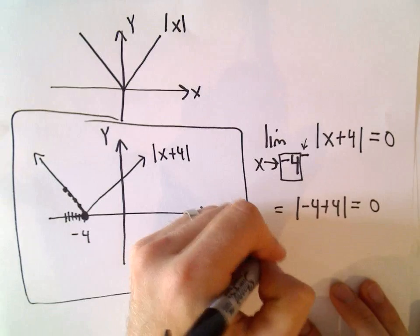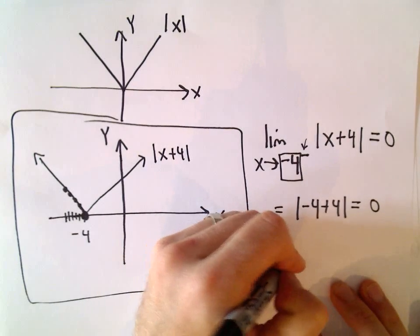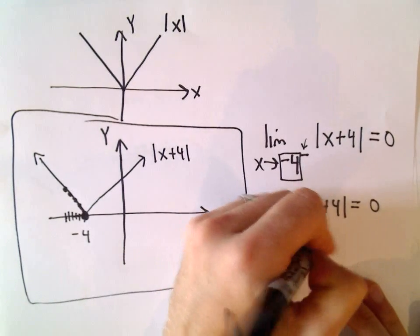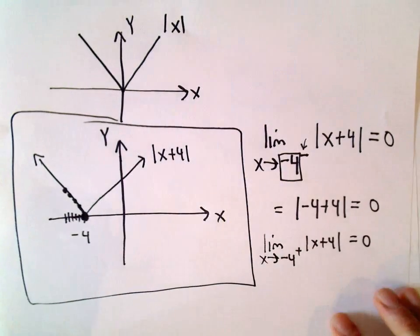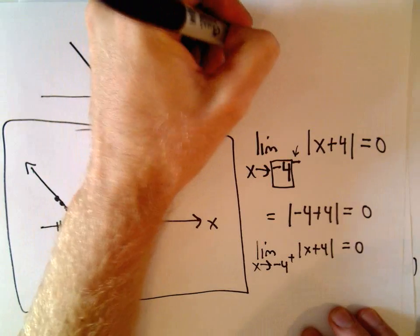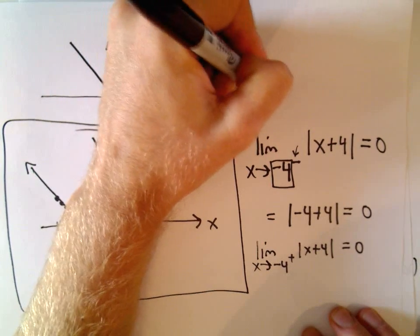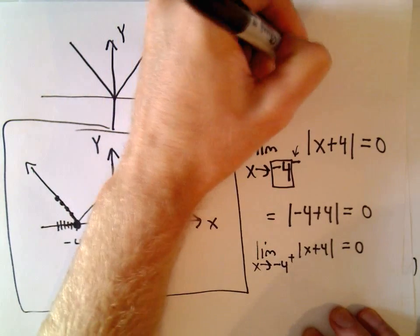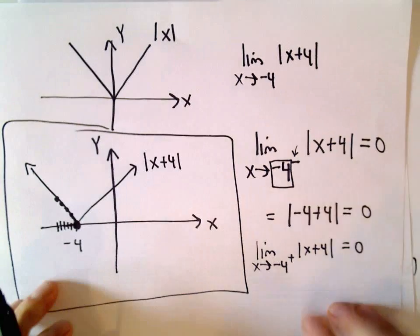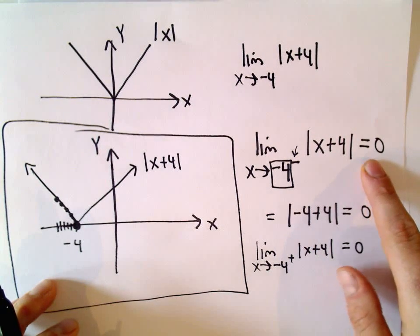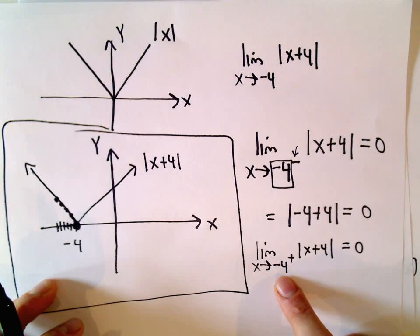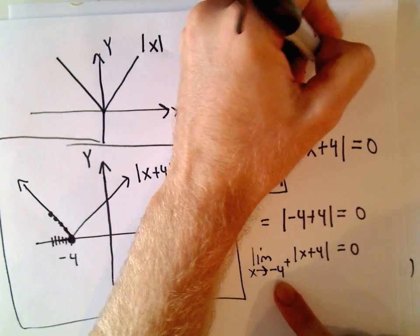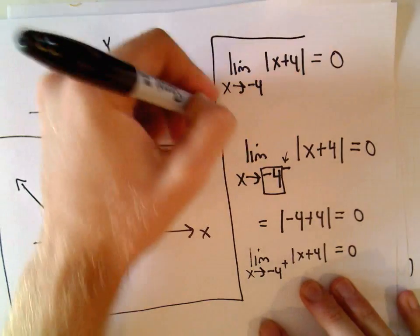It would actually be the same thing if you looked at the limit as x approached negative 4 from the right of x plus 4. Because you would still plug in negative 4, and we would get 0. So if the question had originally asked what's the limit as x approaches negative 4? Well, in this case, since the left-hand limit equals the right-hand limit, we would simply say that that limit does equal 0.